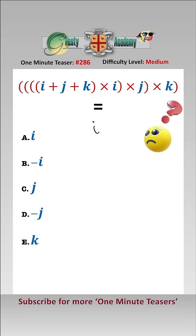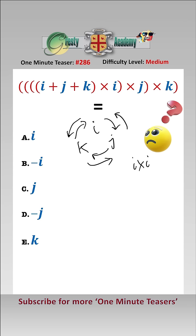To solve this, we need to remember that when we have i, j, and k: i cross j equals k, j cross k equals i, and k cross i equals j. Going the other way: j cross i equals minus k, i cross k equals minus j, and j cross k equals minus i. And of course, i cross i, j cross j, and k cross k are all equal to zero.